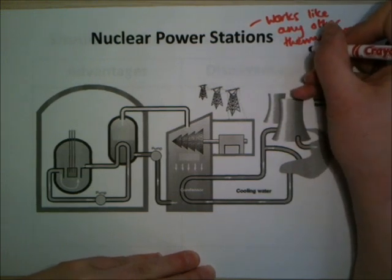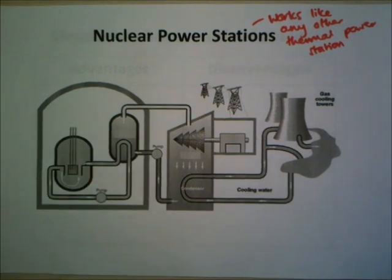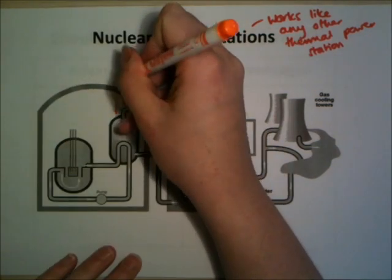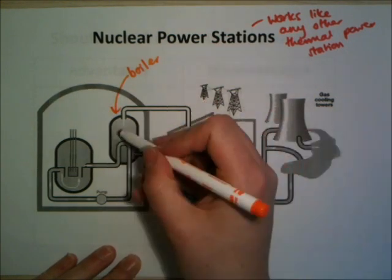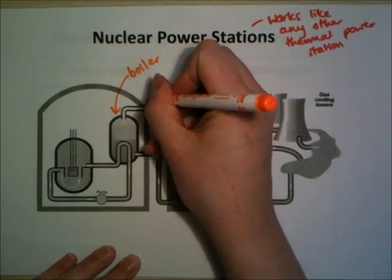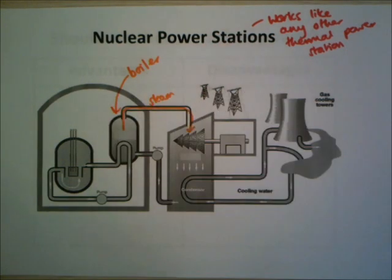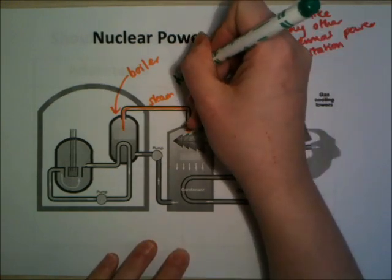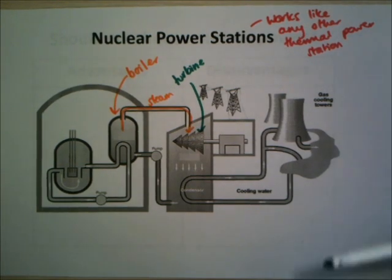In all thermal power stations, water is boiled in a boiler. The water turns into steam, and it's forced around a pipe into a chamber holding a turbine. Like a wind turbine, the steam forces the turbine to spin.